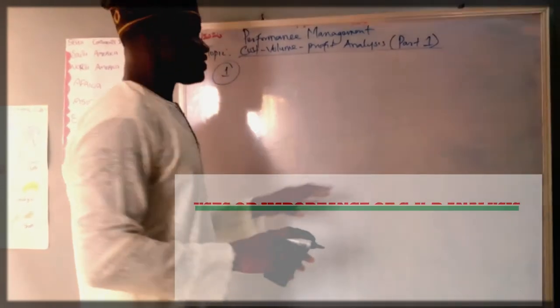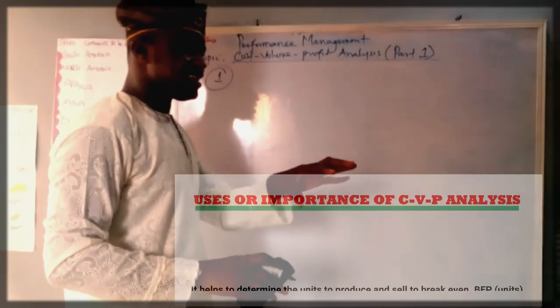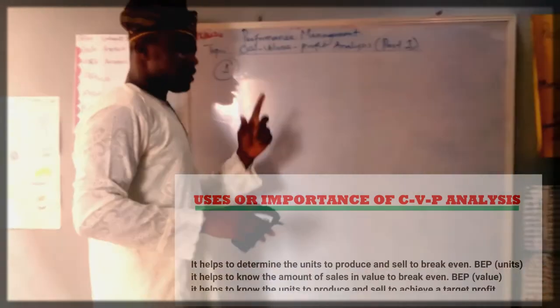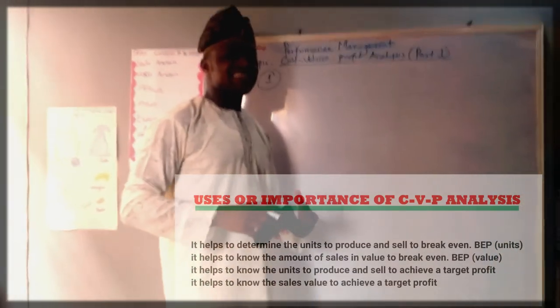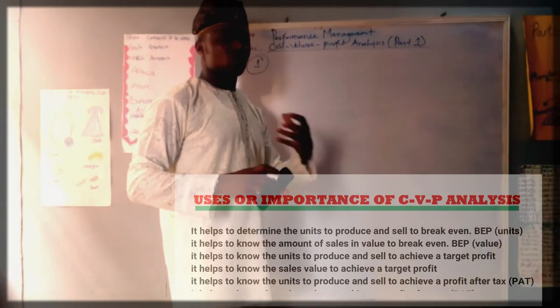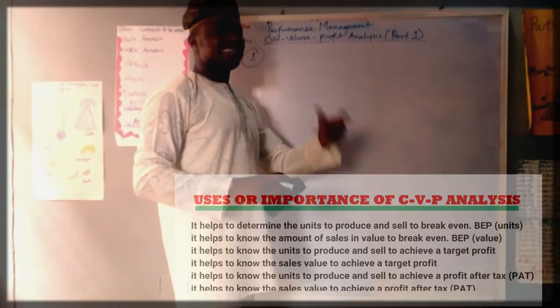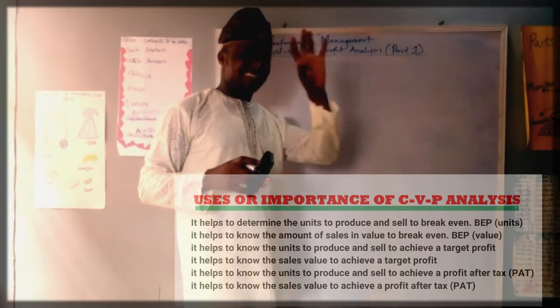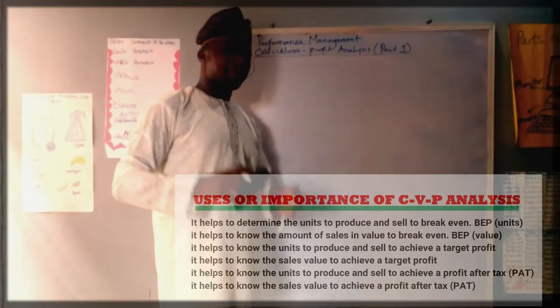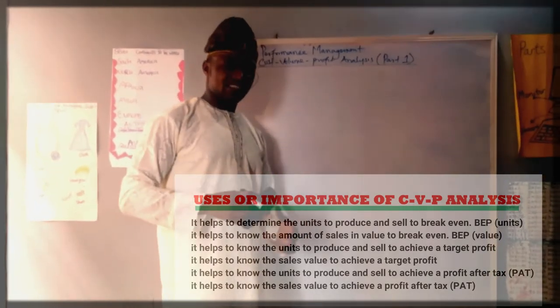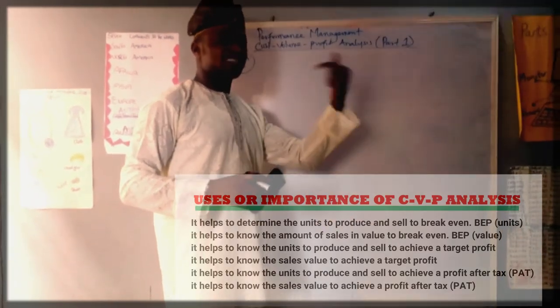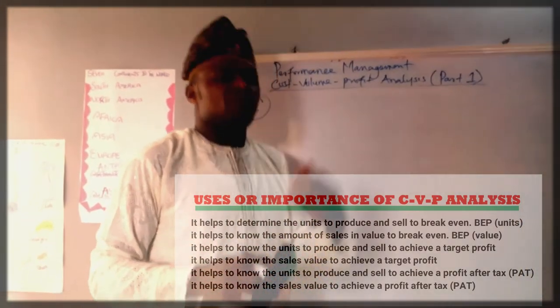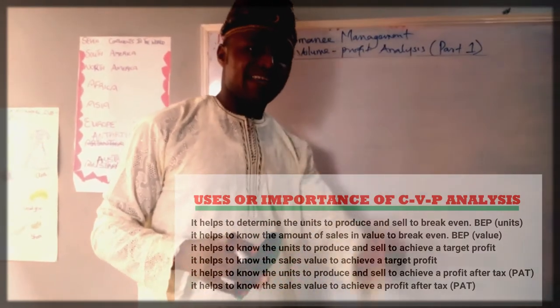One, it helps the management to determine the units to produce in order to break even. Number two, it helps the management to understand the level of sales they must achieve to break even. Number three, it helps the management to also understand the units they must produce in order to achieve a particular target profit. Number four, it helps the management to understand the level of sales they must sell in order to achieve a particular profit. Number five, it helps us to understand the units they must produce and sell in order to achieve a particular profit after tax.